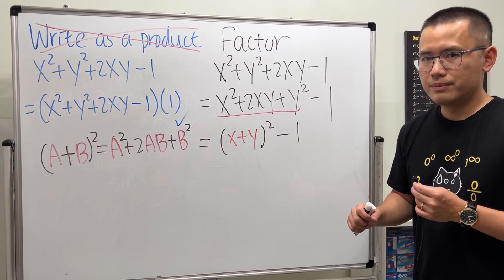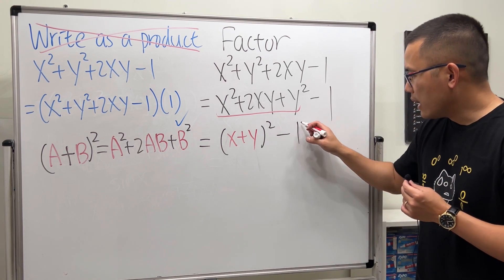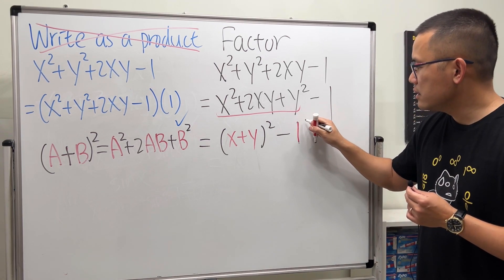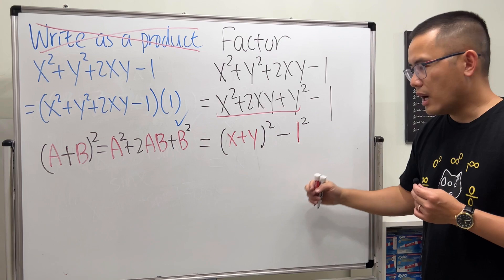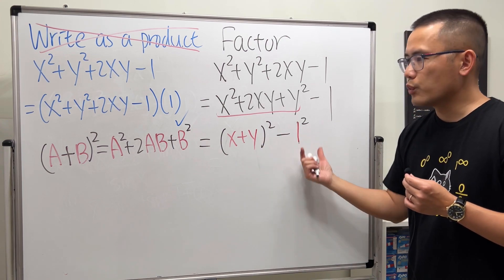So now how can we continue? Here's the deal: one is the same as 1², and now we have a difference of two squares, so once again we can factor it.